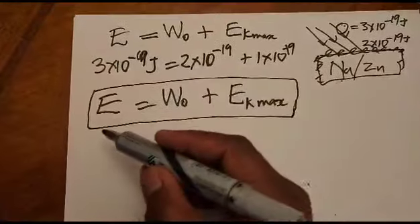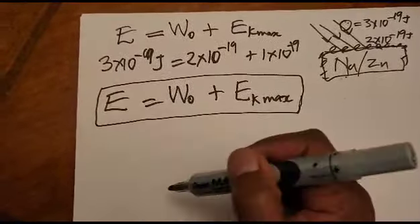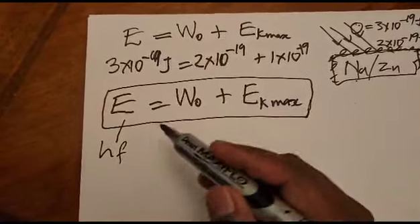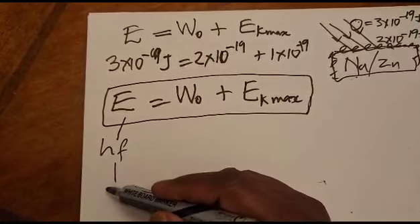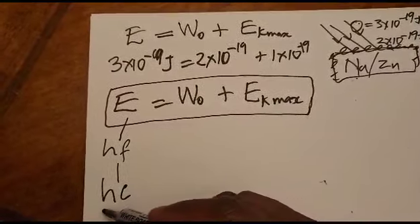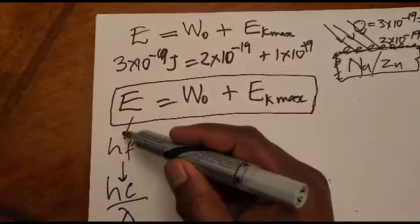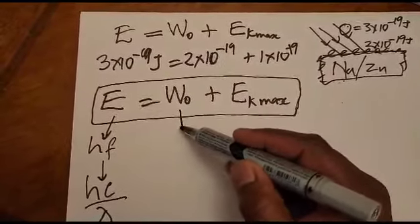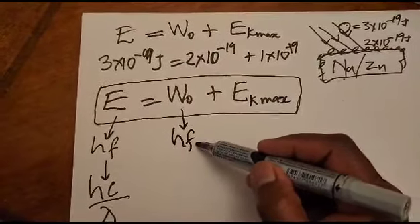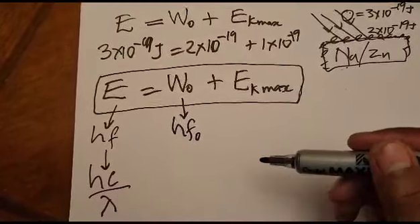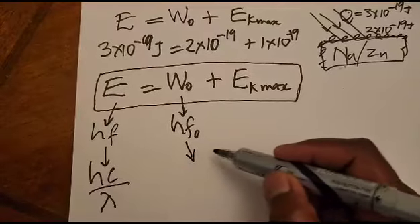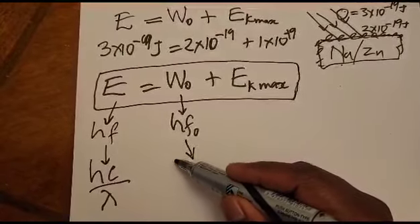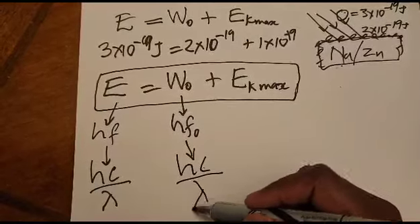If the energy of radiation is not given, you can use frequency to calculate it, or use E = hc/λ if wavelength is given. If the work function is not given, you use the threshold frequency to calculate it. If the threshold frequency is not given, you can use the threshold wavelength to find the work function.